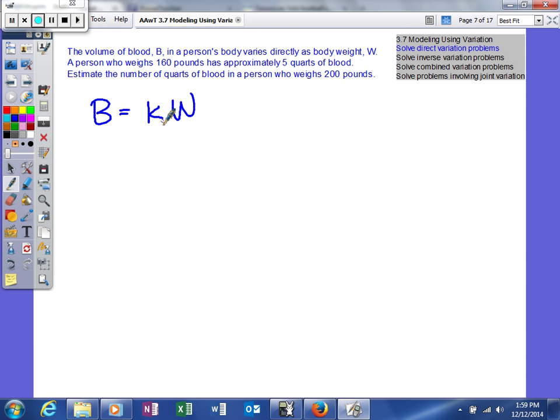Now we need to figure out what k is and use it to predict in the future. To do this, we need a situation where we know both B and W. A person that weighs 160 pounds has approximately 5 quarts of blood. So we'll say 5 quarts equals k times 160 pounds.